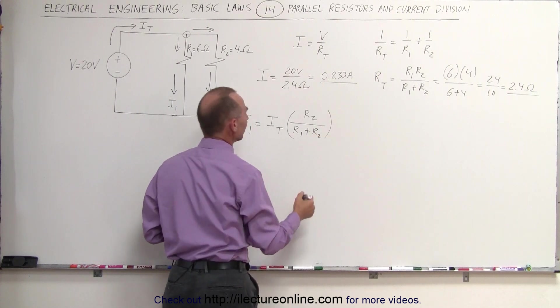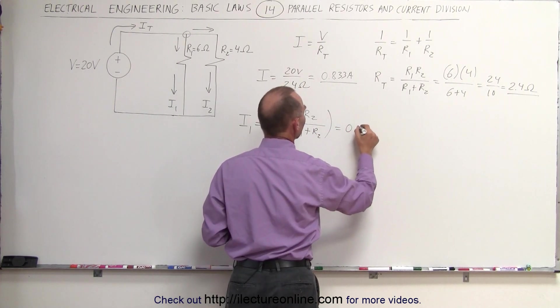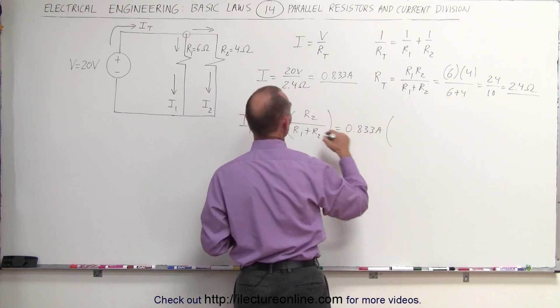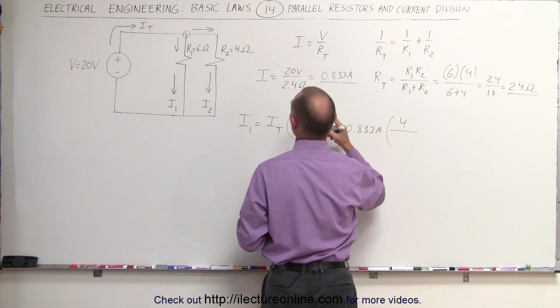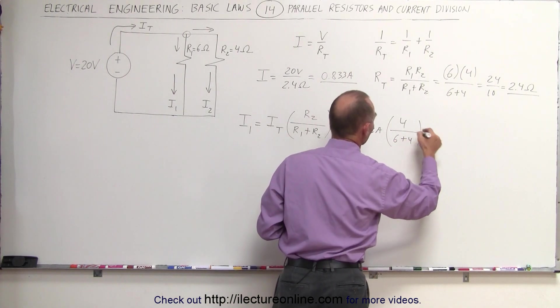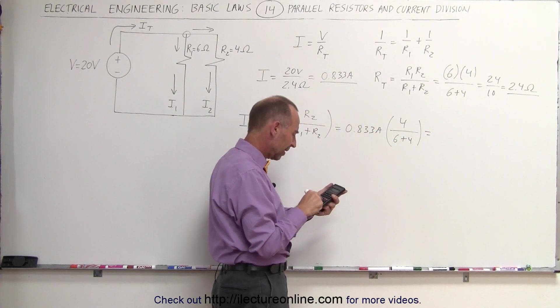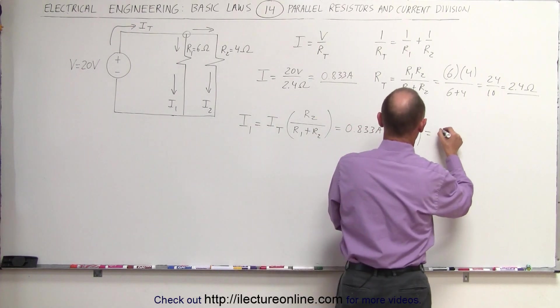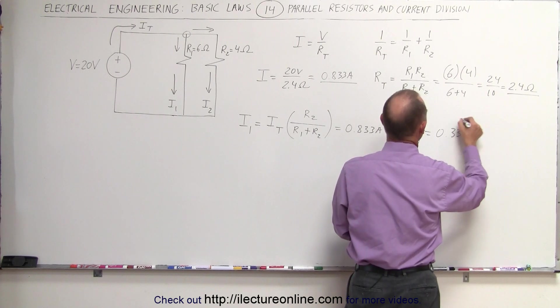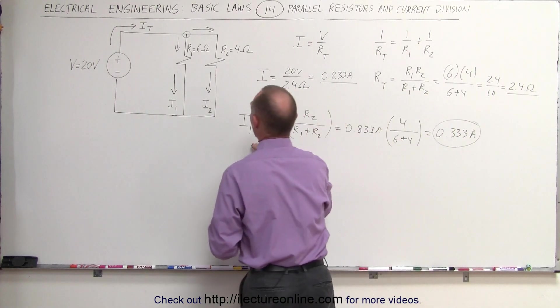In this case, that's equal to 0.833 amps times R2, which is 4, divided by R1 plus R2, which is 6 plus 4, which is 4 tenths, so times 0.4 equals 0.333 amps. That's the current in the first branch, I1.